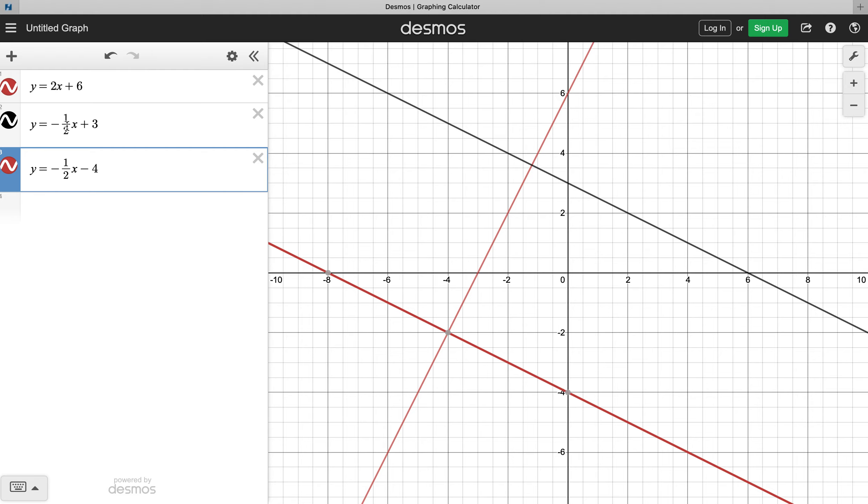So a slope of 2 over 1 and negative 1 half will be perpendicular. And as you can see, these two both have a negative 1 half slope, and so then they're parallel.